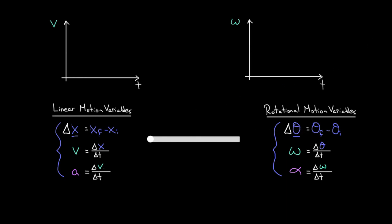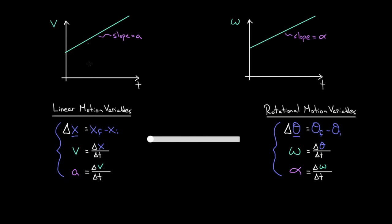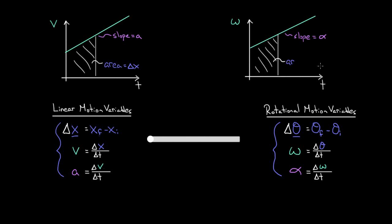And it even works with graphs. On a velocity versus time graph, the slope equals the acceleration. So on an angular velocity versus time graph, the slope represents the angular acceleration, because the relationship between omega and alpha is the same as the relationship between v and a. Similarly, the area under the curve on a velocity versus time graph represented displacement, so the area under an omega versus time graph represents the angular displacement.